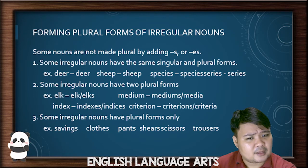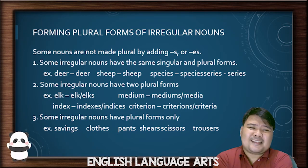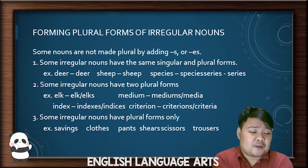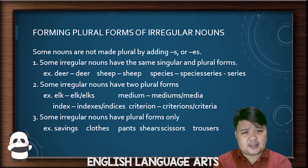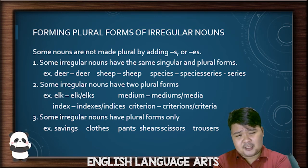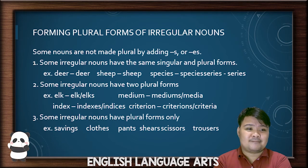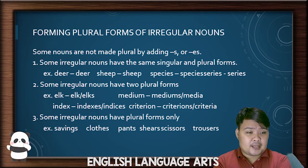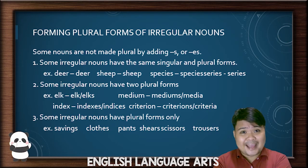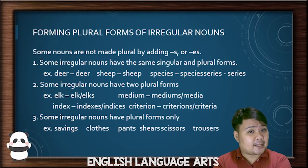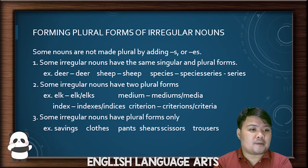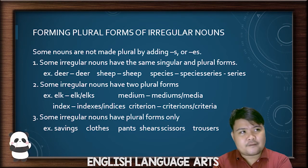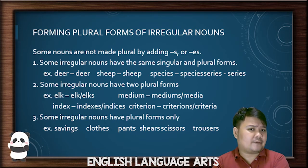There are also certain nouns that are irregular — they do not follow the general rule when made plural. First, some nouns don't change at all: the plural of deer is just deer, and the plural of sheep is just sheep. Some nouns have two acceptable plural forms: elk can be elk or elks, and index can be indices or indexes. Usually these are nouns that come from a different language — foreign words.